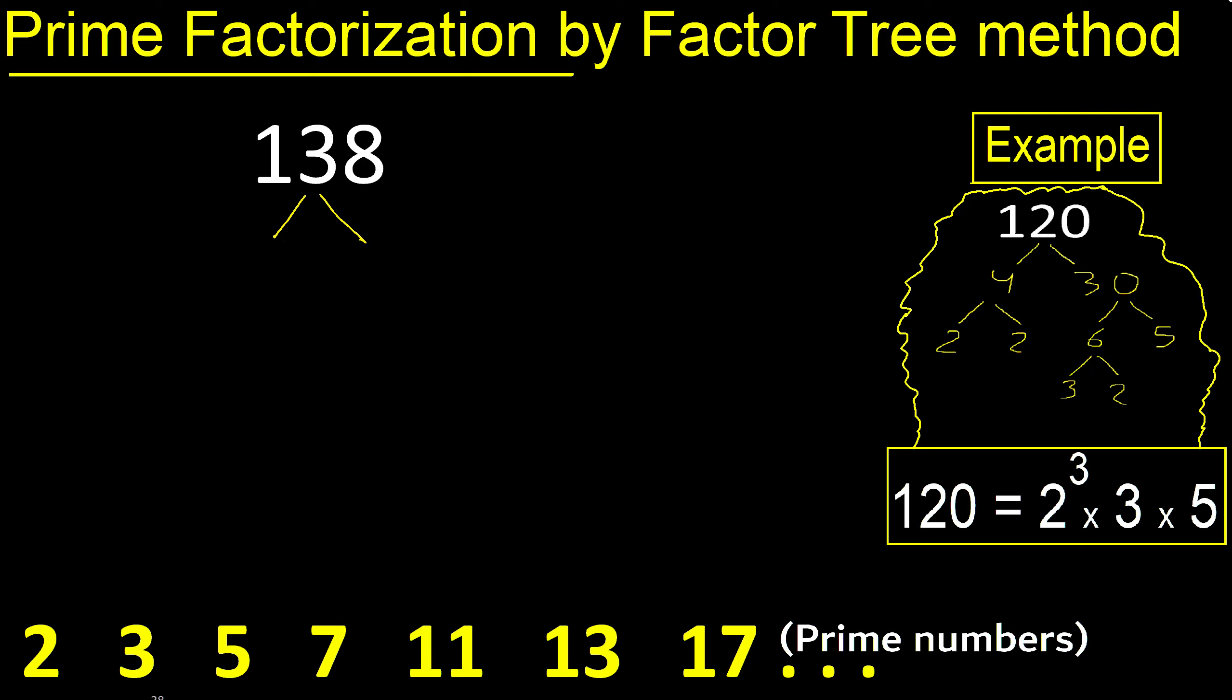Two numbers that multiply are 138, or 138 can be divided by 2 because the last digit is even. Therefore, 138 divided by 2 is 69. 2 multiplied by 69 is 138.